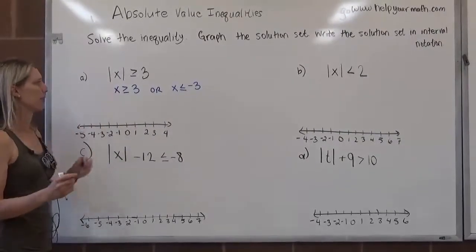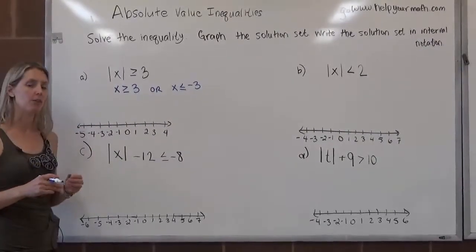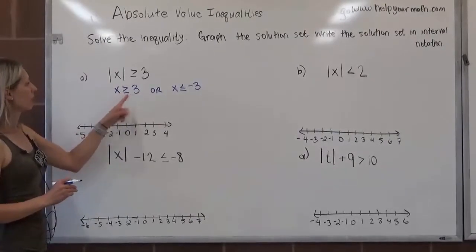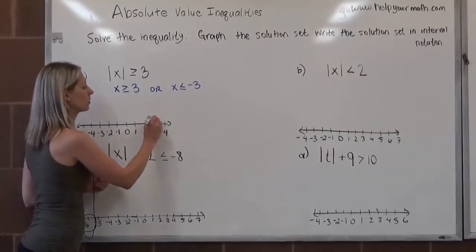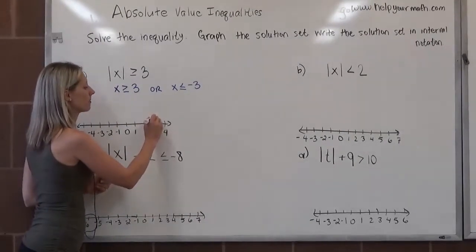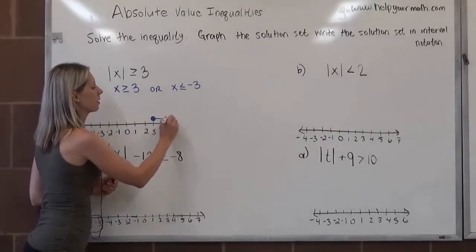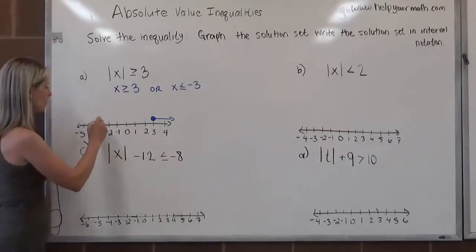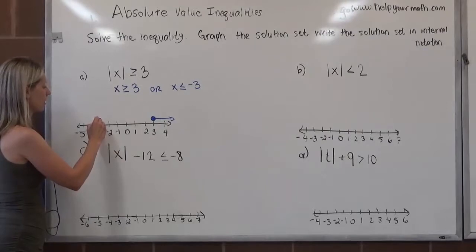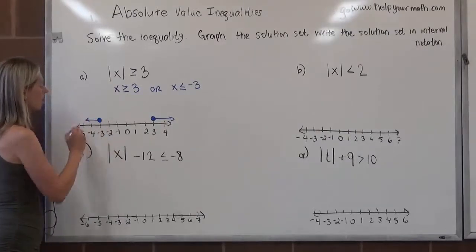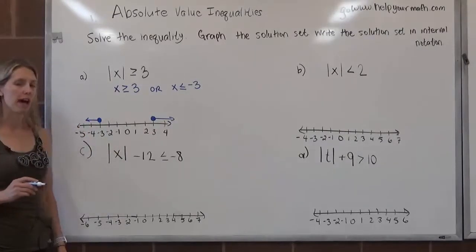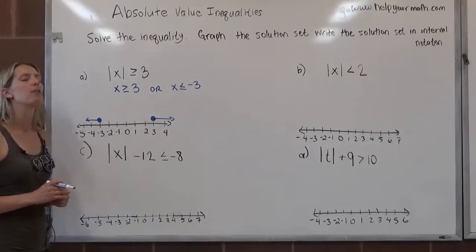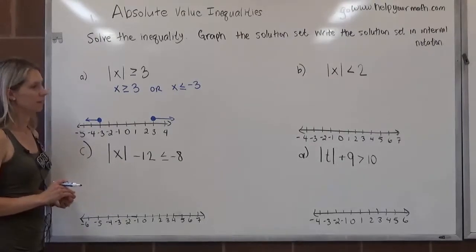There's nothing to solve here because x is already by itself in either case, so we're ready for the graph. x is greater than or equal to 3: that's a closed circle over 3 with an arrow going to the right. x is less than or equal to negative 3: that's a closed circle over negative 3 with the graph going to the left.